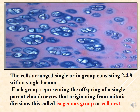Chondrocytes are arranged either singly within one lacuna, or in groups. Each group contains two, four, or eight cells within a single lacuna. Each group represents the offspring of a single parent chondrocyte originating from mitotic division. This is called an isogenous group or cell nest.